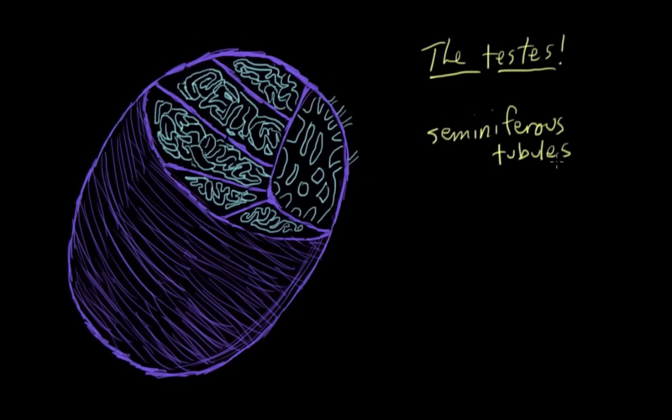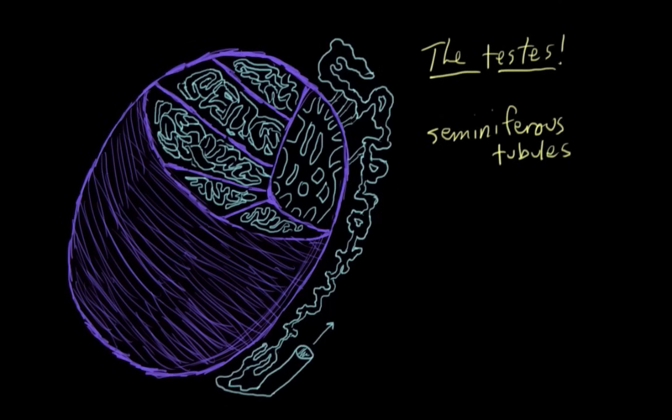and the testosterone is made by cells called Leydig cells that hang out on the outside of these tubules. The sperm are made in the seminiferous tubules, and then they travel out into the epididymis to mature and get ready to head off via ejaculation to try to find an egg to fertilize.